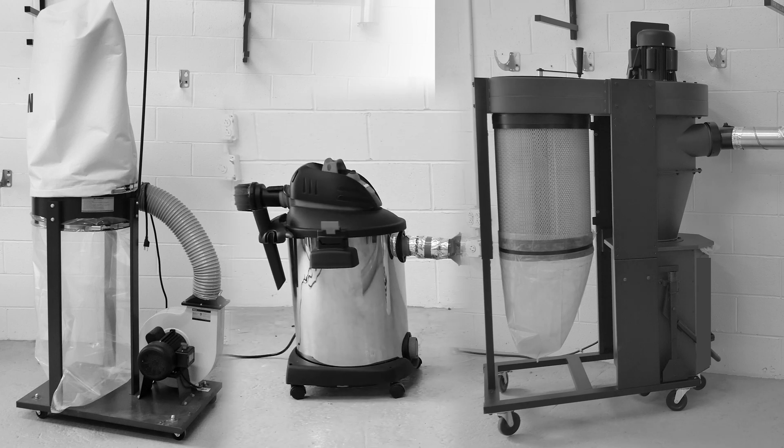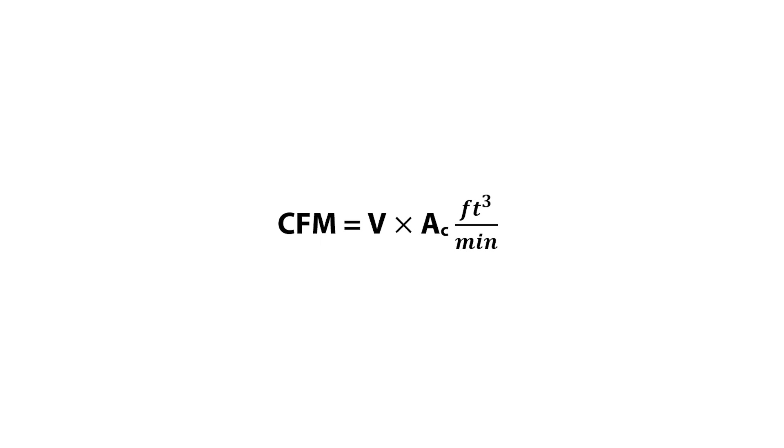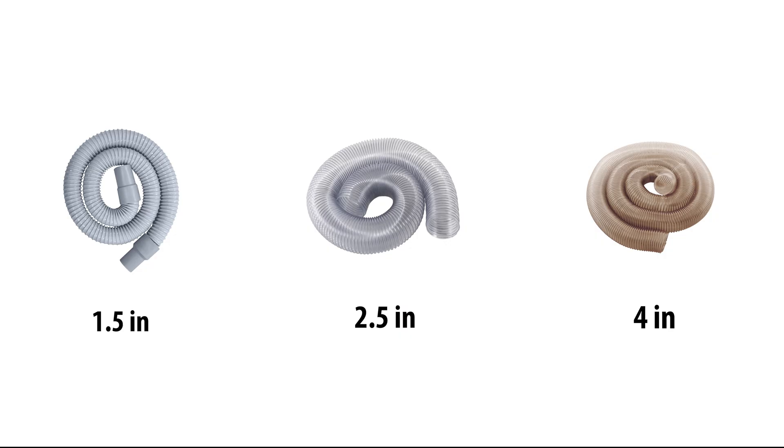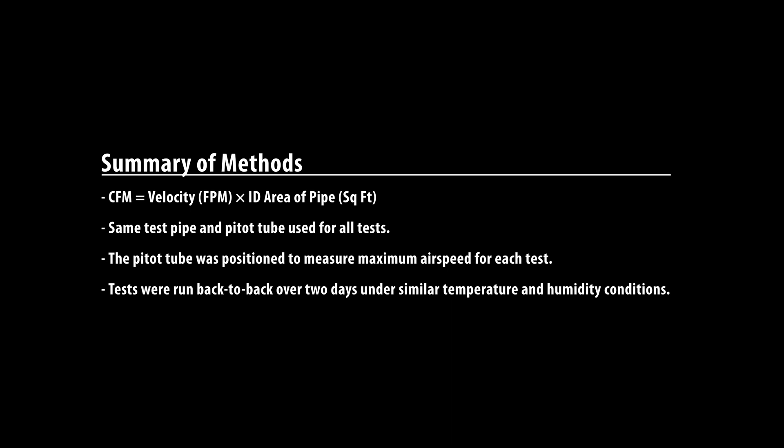Our tests will measure airflow results in cubic feet per minute, or CFM. One by one, we test each dust collector's airflow using varying port sizes and hose lengths, starting with the Supercell. Tests were conducted over two days with similar temperatures and humidity conditions, and the pitot tube was placed to capture maximum airflow for each trial.